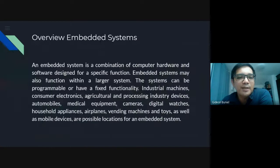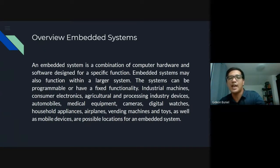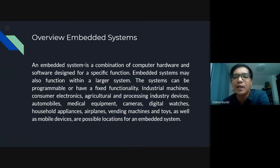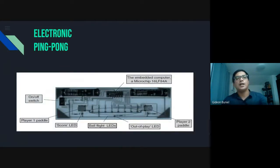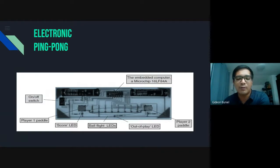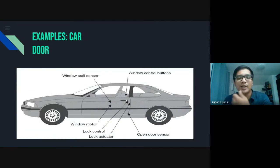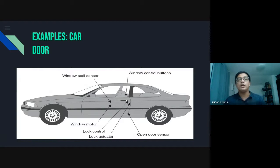Quick review for the embedded system: an embedded system is a combination of computer hardware and software designed for a specific function. For example, the ping pong scoreboard only tells you the score — it provides an automated scoreboard for ping pong. For the car door embedded system, specifically its system is designed only to open the door and, most importantly, to prevent accidents.